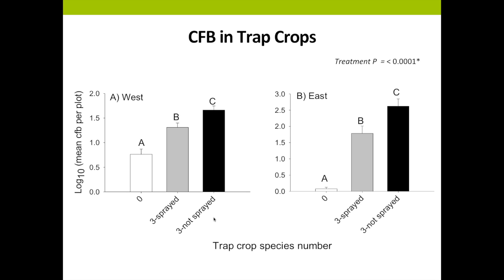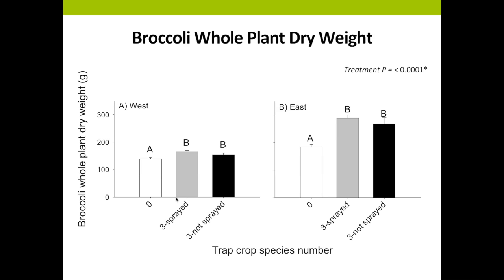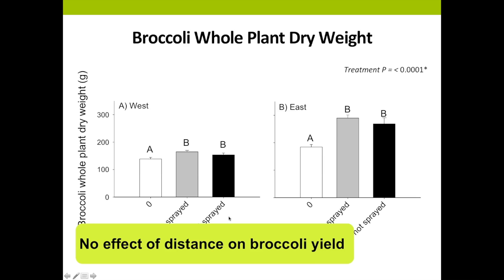In controls with only bare ground, we found very few flea beetles. When a trap crop was present, we found significantly more. When we killed flea beetles by spraying with insecticide, we saw significantly fewer in that trap crop. Looking at broccoli whole plant dry weight, we found that broccoli planted in the presence of a trap crop attained the greatest dry weight — at both locations. We also found no effect of distance on broccoli yield.